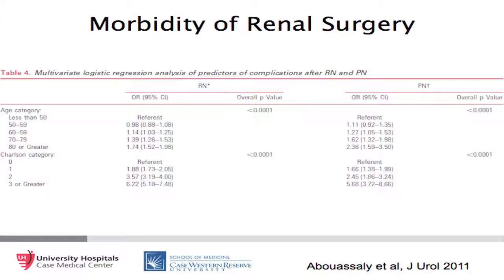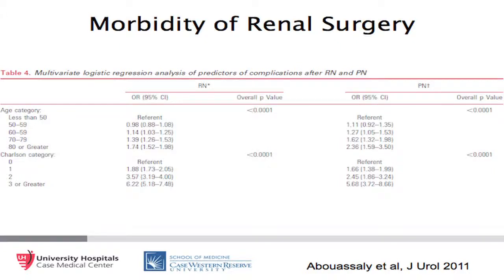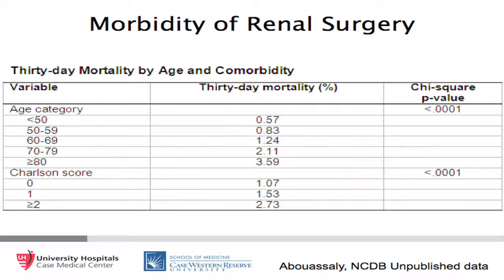We can't ignore the impact of surgical morbidity, particularly in the elderly. Although complication rates increase with age for both radical and partial nephrectomy, there is a more dramatic increase with partial nephrectomy—an octogenarian has a 2.4 times risk of complication after partial nephrectomy compared to a patient under age 50. The 30-day mortality is also not insignificant; for a patient over age 80, it is estimated to be 3.6%.